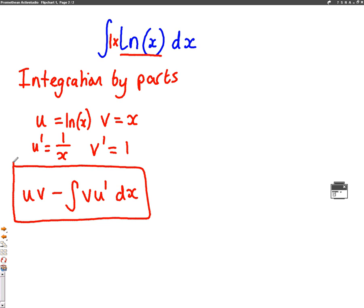So all we need to do is sub in what we've got. u is log x and v is x. So we're going to have x log x take away the integral of v u dash, which in this case is going to be x times 1 over x dx.